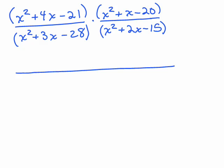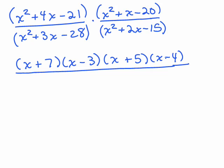Okay. Here are your factors. This is going to be x plus 7 times x minus 3. That's how you get x squared plus 4x minus 21. This will be x plus 5 and x minus 4. Let's see, the bottom one, let's see factors of 28 have a difference of 3, 7 and 4, right? So it's going to be x plus 7 and x minus 4.